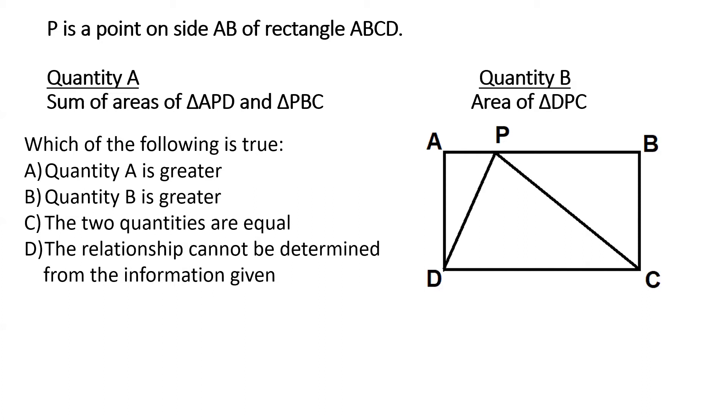And we are given four options. The first one is quantity A is greater. The second one is quantity B is greater. The third one is the two quantities are equal. And the fourth one is the relationship cannot be determined from the information given.